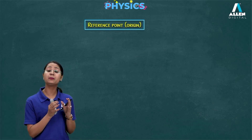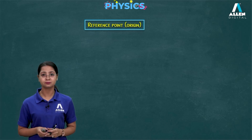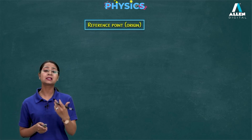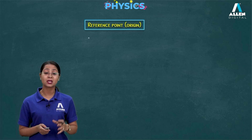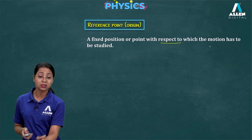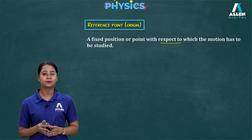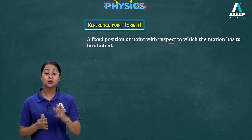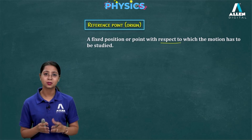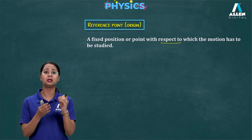Now we have also discussed one more important term: reference point, also known as origin. What is a reference point? As I told you, both time and reference point are important to describe the motion of any object. A reference point is a fixed position or fixed point with respect to which the motion has to be studied. For example, you are sitting in your room observing the wall — you yourself act as the reference point, a fixed point, and you observe the position of the wall.